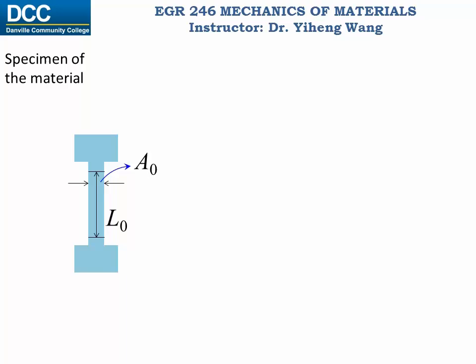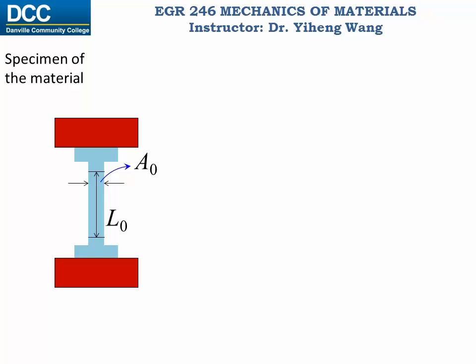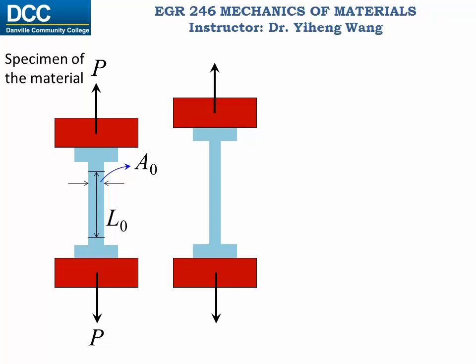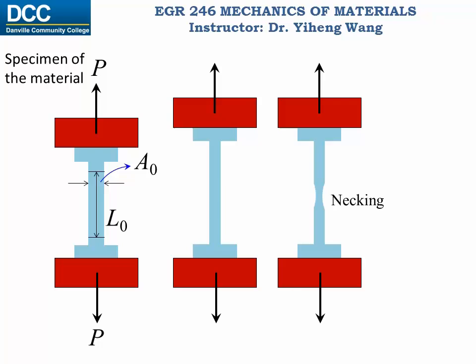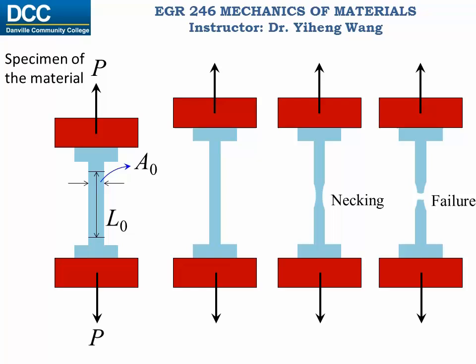Sometimes there is simply a series of length marks on the specimen. We then install the specimen into the testing machine by screwing or clamping the two ends into the machine, and the machine starts to pull the specimen, applying tension forces on it. The specimen deforms under the continuous pulling, getting longer and thinner, until it starts necking and eventually fails, completing the experiment.